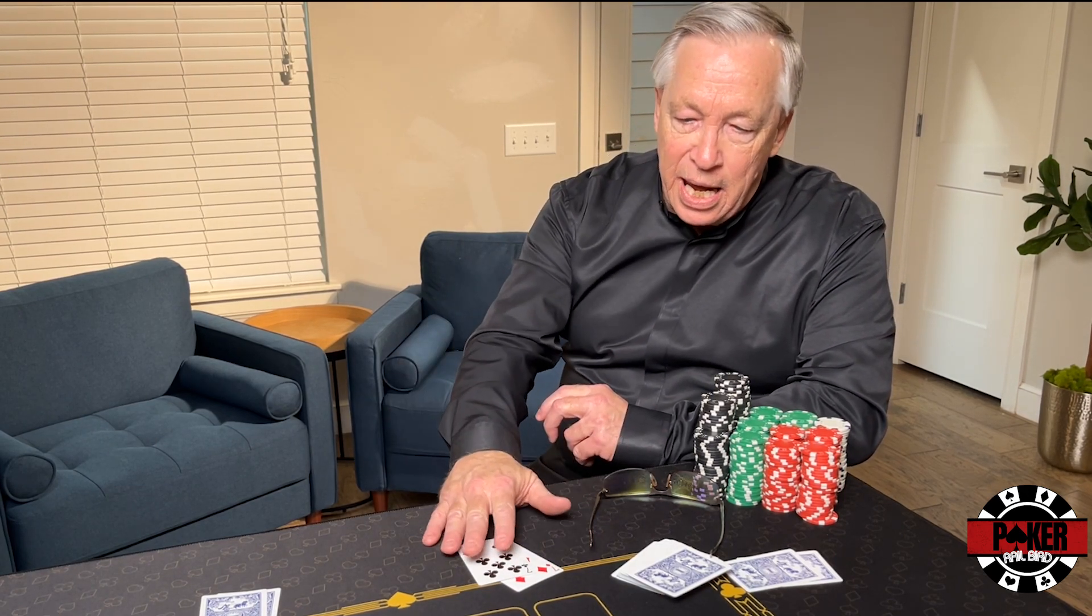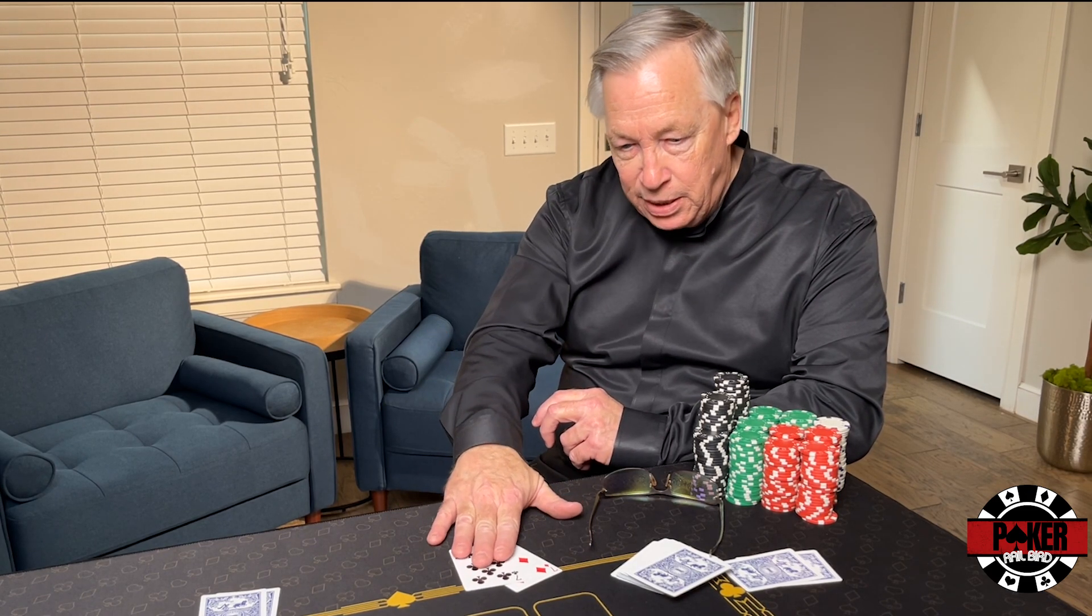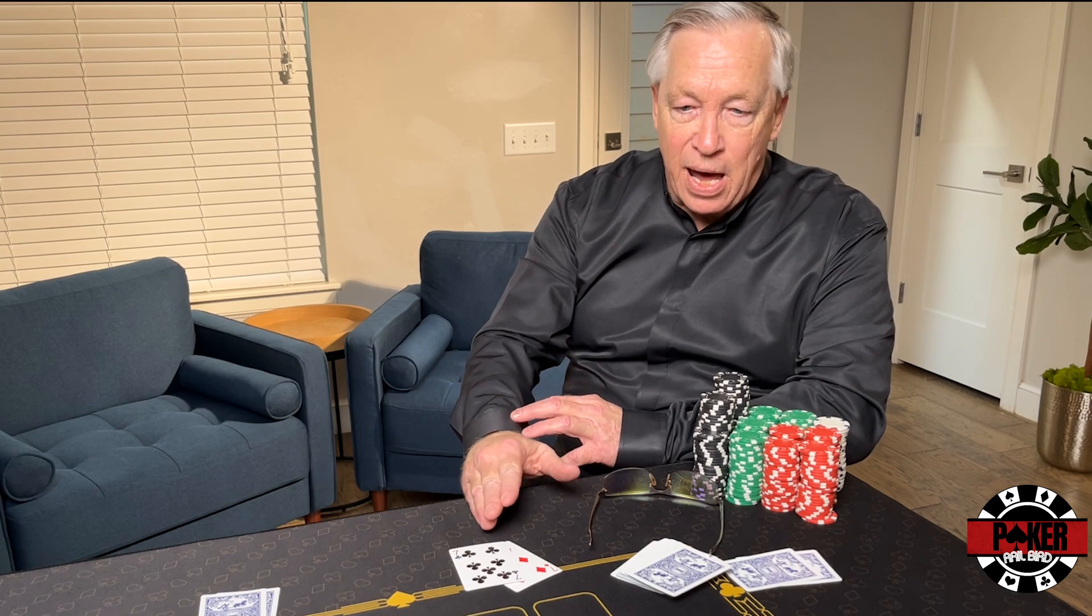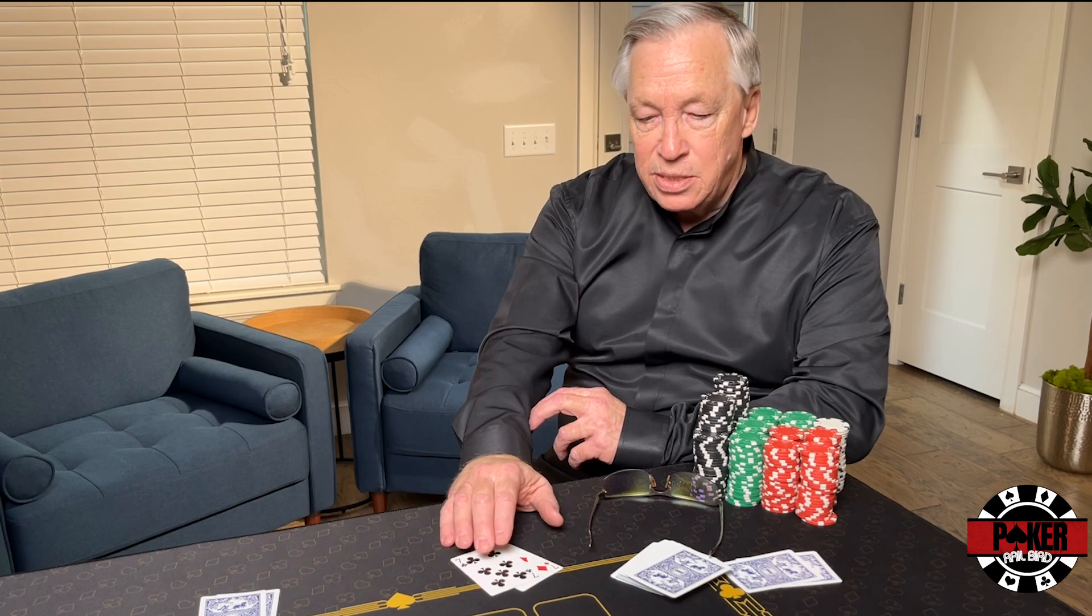If there were only five players in the hand, then we would say the same seven pocket pairs beat this. Seven times five is 35, divided by two would be a 17 percent chance of an overpair to my pocket sevens.